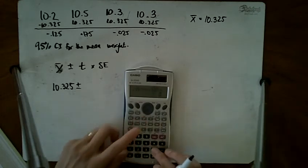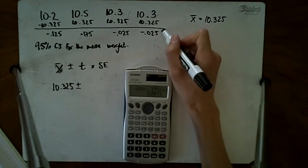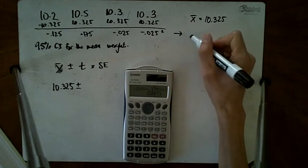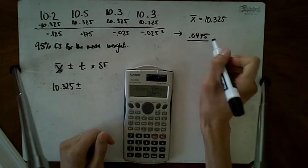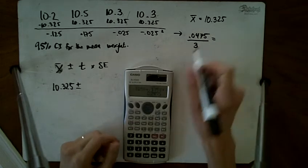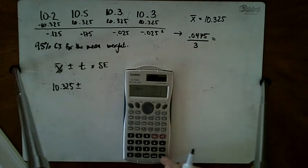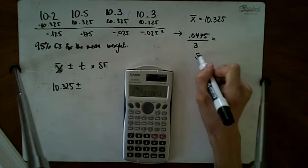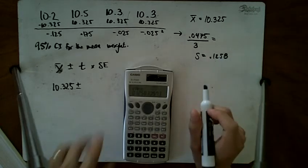Plus 0.025 squared, plus 0.125 squared. The sum of all the squares is 0.0475. I divide by n minus 1, which is 3, and take the square root of that answer. My standard deviation is 0.125.